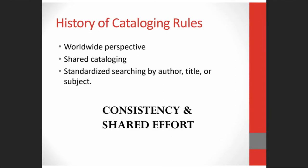The idea of shared cataloging was developed, which allowed libraries to share bibliographic information with each other to keep from duplicating the work, and to decrease the amount of effort that the cataloger expended on each item. Librarians saw the value in organizing collections in a consistent manner, so that a patron could find any type of item in any library quickly and efficiently. The idea that patrons should be able to find items based on the author, title, or subject began to take hold, and these themes of consistency and shared effort led to our first set of cataloging rules.